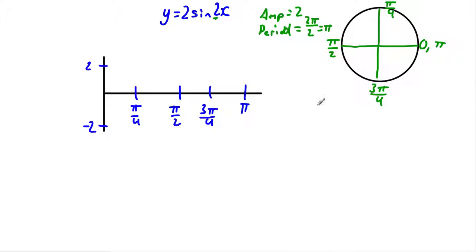It doesn't really make sense how that works out. Remember, we're taking all of these x values, and we are multiplying them by 2. All right, so here we go. So 0. Well, 2 times 0 is still 0. So sin of 0 is 0, and 2 times 0 is 0. So there we go.